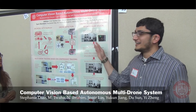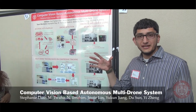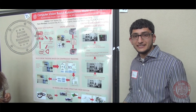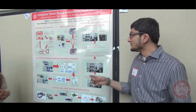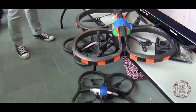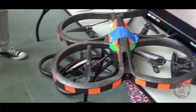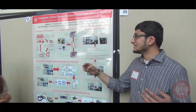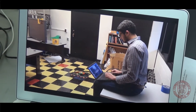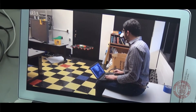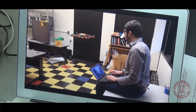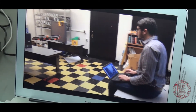Our project is about having quadcopter drones and using computer vision techniques to make them completely autonomous. We have drones which have a camera mounted on them and we're using the video feed to control those drones — for example, tracking other drones, avoiding obstacles in the drone's path. We can also construct 3D models from the drone.